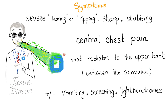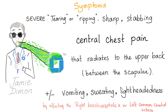Jamie described a severe tearing or ripping, sharp, stabbing central chest pain that radiated to the upper back between his two scapulae. He was also vomiting, sweating, and experiencing lightheadedness. Why lightheadedness? Because aortic dissection can decrease blood flow to the brain, and hypertension — a major risk factor for aortic dissection — is also notorious for causing lightheadedness. Medicine makes so much sense once you understand what you're talking about.